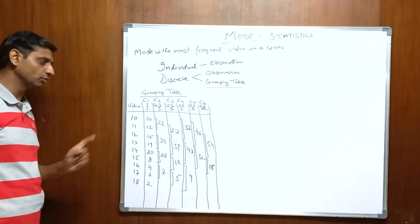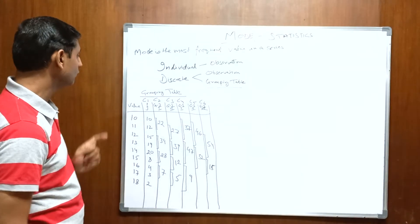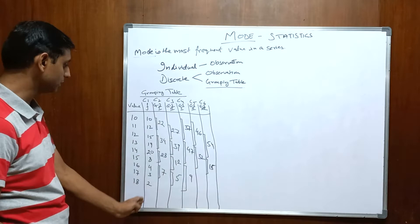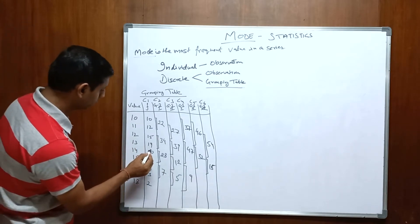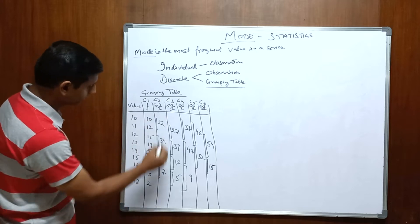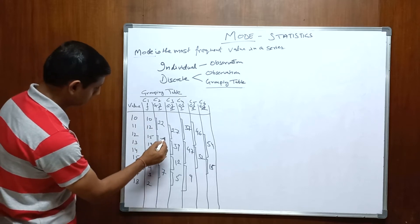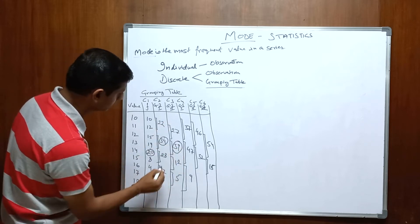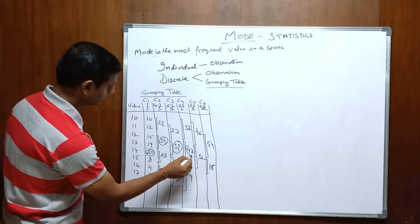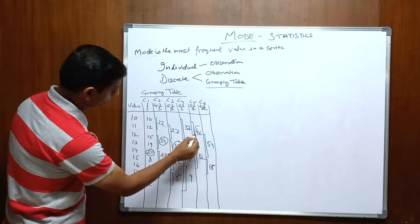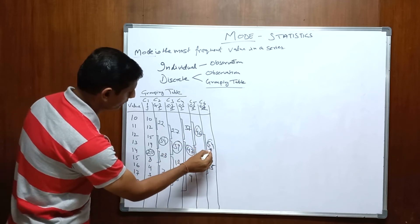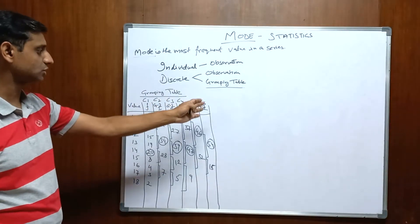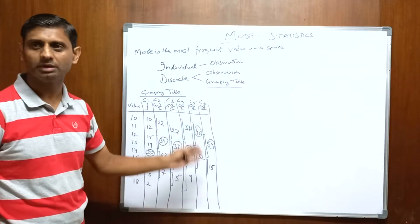In this grouping table, we have to find out the maximum value in each column. In C1, the maximum frequency is 20. In C2, the maximum is 34. In C3, the maximum is 39. In C4, the maximum is 47. In C5, the maximum is 46. And in C6, the maximum is 54. So our grouping table is done — we have identified the maximum in each individual column.